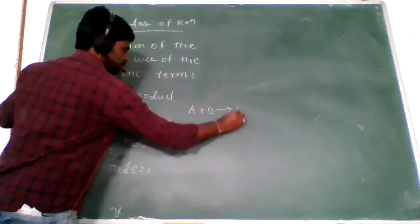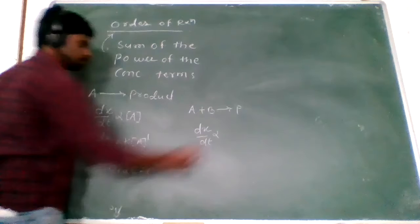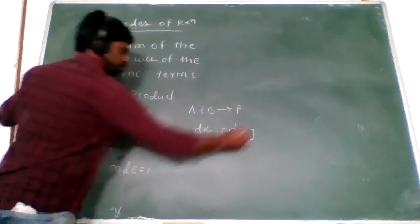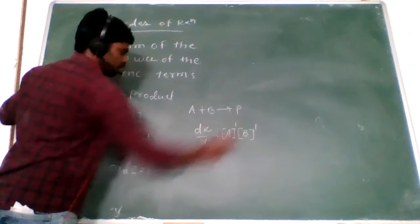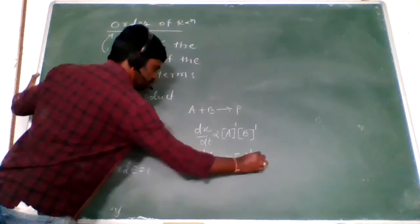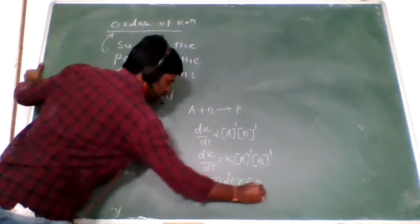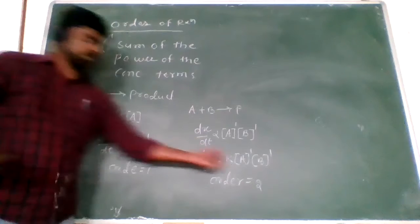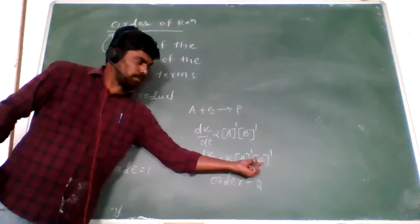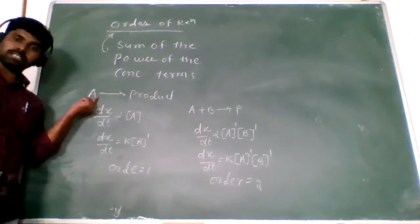Now I give the second example: A plus B gives rise to product. dx/dt, the rate of reaction, is directly proportional to A into B. Concentration of A is one, concentration of B is one. So the order is one plus one — that is second order. Here only one reactant is there, so that is the first order reaction.